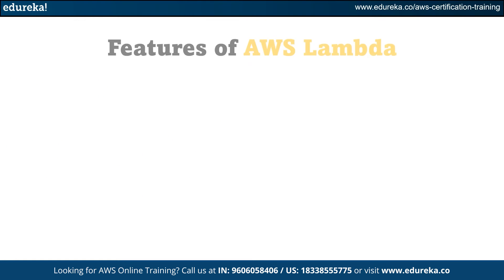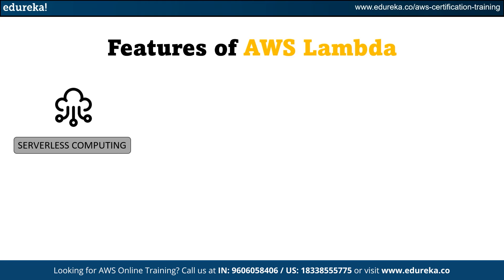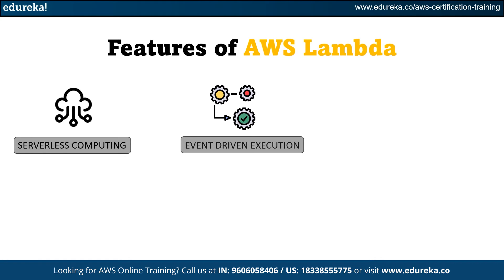Moving ahead, let's look at the features of AWS Lambda. The first feature is serverless computing, which means you don't have to worry about managing servers — AWS takes care of the infrastructure, allowing you to focus on writing the code. The second feature is event-driven: AWS Lambda responds to events triggered by various AWS services or custom events, and it can automatically scale in response to the incoming workload.